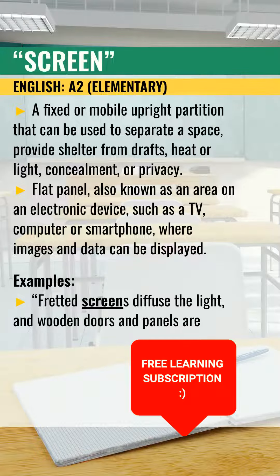Screen — meaning. The first definition: a fixed or mobile upright partition that can be used to separate a space, provide shelter from drafts, heat or light, concealment, or privacy.